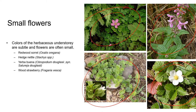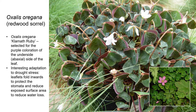Yerba buena has highly aromatic foliage that smells minty and its leaves can be used to make a tea. Wood strawberry produces fruit that are small, but they're really sweet and very tasty, unlike its relative beach strawberry that grows in the sand dunes close to the ocean and whose fruit are quite mealy and bitter.